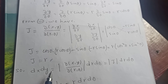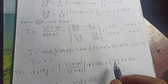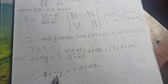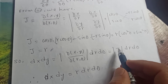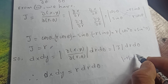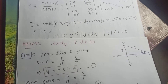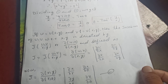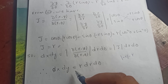Now, dx dy is defined as the modulus of the Jacobian times dr dθ. Since J = r, we take the modulus |r|, so dx dy = |r| dr dθ. We keep the modulus because if r is negative, taking the modulus still gives a positive r. Therefore dx dy = r dr dθ, which is what we wanted to prove.